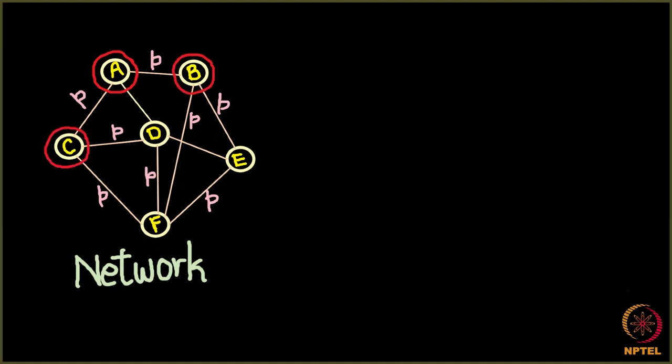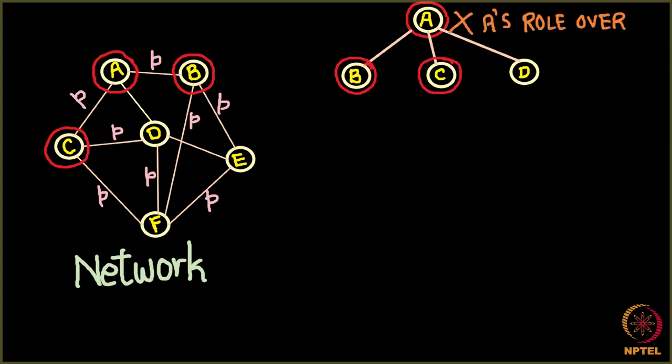So maybe A is able to infect B and C. How can I lay out it in the form of a tree? What is happening here? Let us see. Here is A and A was having three neighbors B, C and D and A was able to infect B and C. And now you see A's role is over. I will discuss more about it, what I mean here.